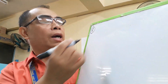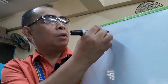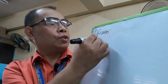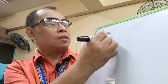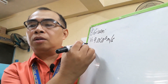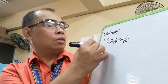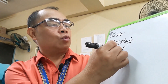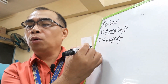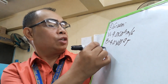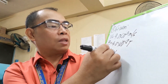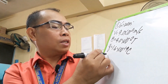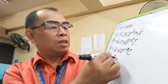Let us identify the given values for problem number 2: speed V = 9.0 × 10⁶ m/s, magnetic field B = 4.0 × 10⁻² Tesla, charge Q = 1.6 × 10⁻¹⁹ coulombs, and the angle is 90 degrees (right angle). We also have length L = 15 cm, which converts to 0.15 meters.